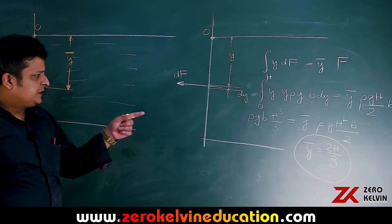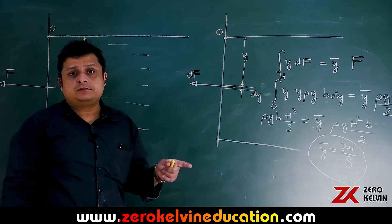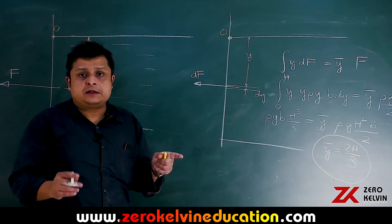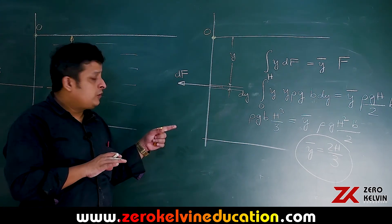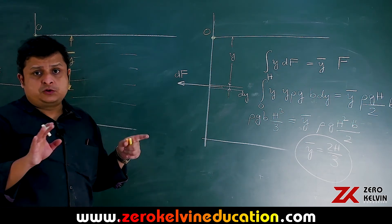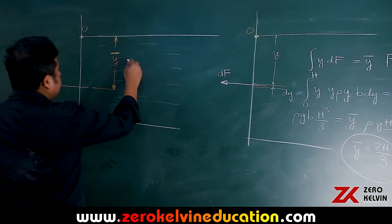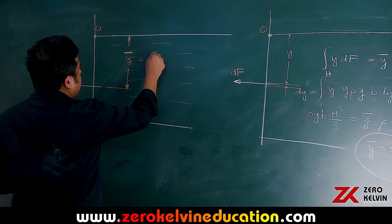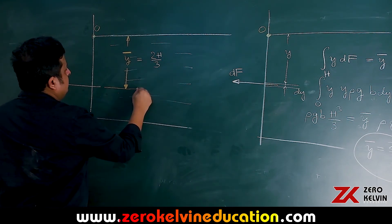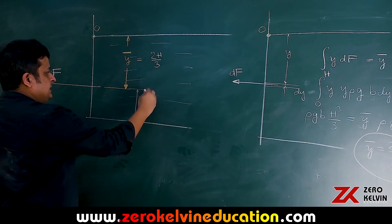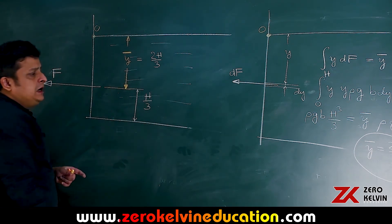Solving for ȳ: (ρg·b·h³/3) = ȳ × (ρg·h²·b/2), so ȳ = 2h/3. This is the distance of the line of action of the net force acting on the vertical rectangular wall from the free surface of the liquid. That means from the base, the distance is h/3.